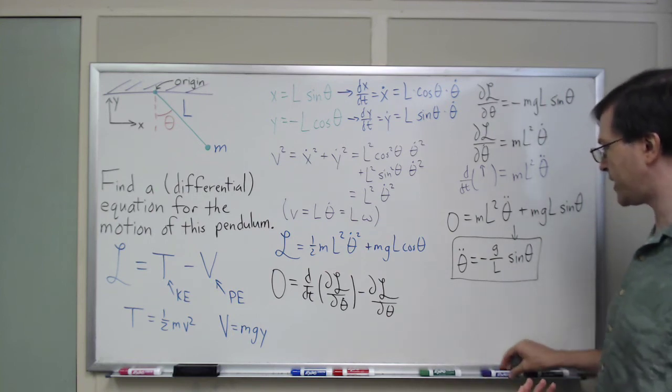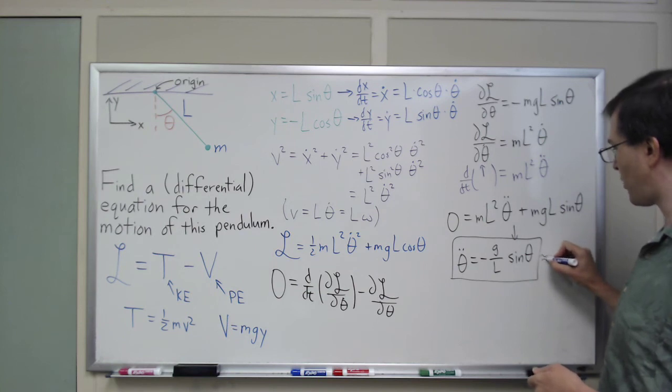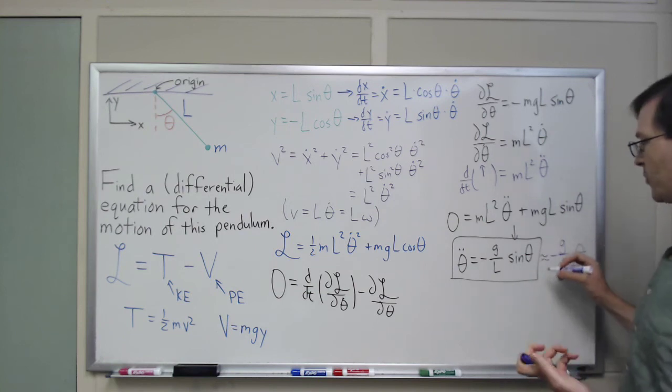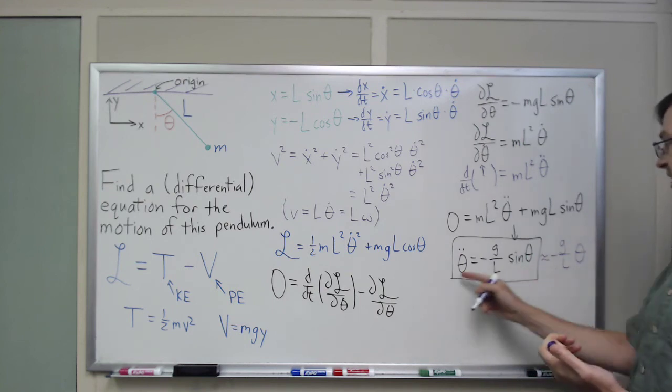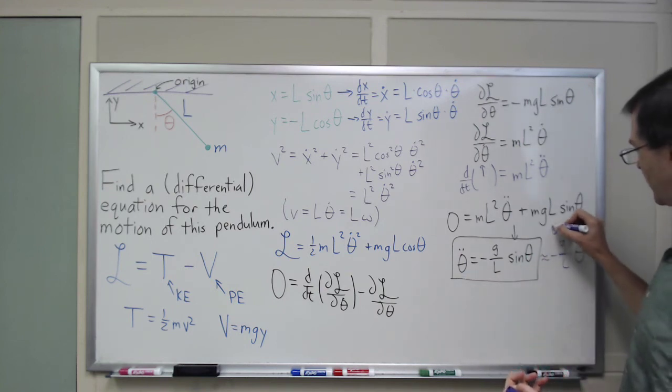And, of course, we get to the same point here where, for small angles, sine of theta is approximately theta, so this is approximately minus g over L theta, and we find that this is a harmonic oscillator in that limit.